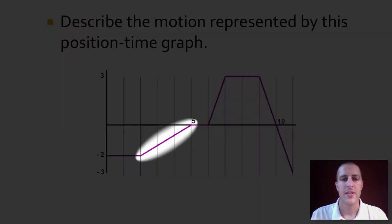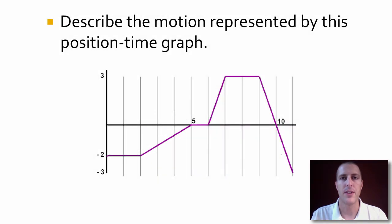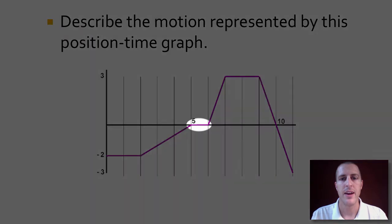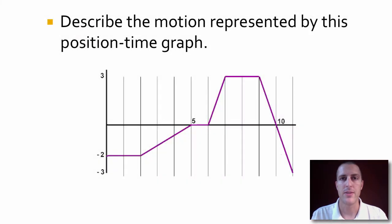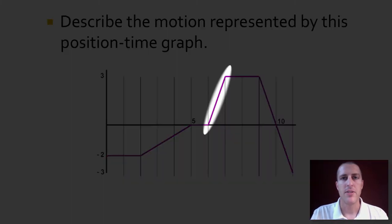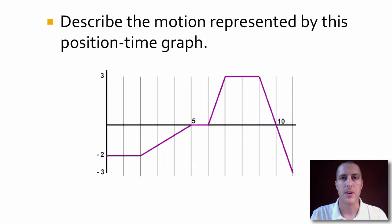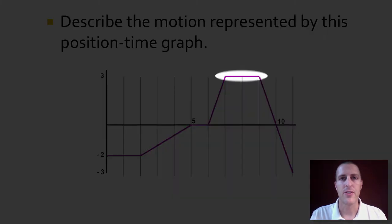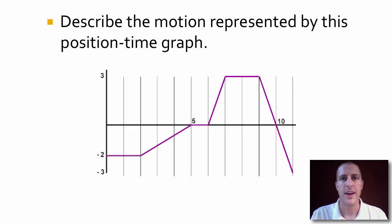Then the graph slopes upward, which gives us a constant positive velocity, so we're moving in the positive direction at a constant rate. Then we go horizontal again, which means we stop, stand there for a second. And then we're back to a positive velocity again, except this one's steeper. That means we're going faster in the positive direction. We level off another horizontal section, which means we stopped again. And then we go to a steep negative slope, which means we have a negative velocity going pretty fast and we're moving in the negative direction.